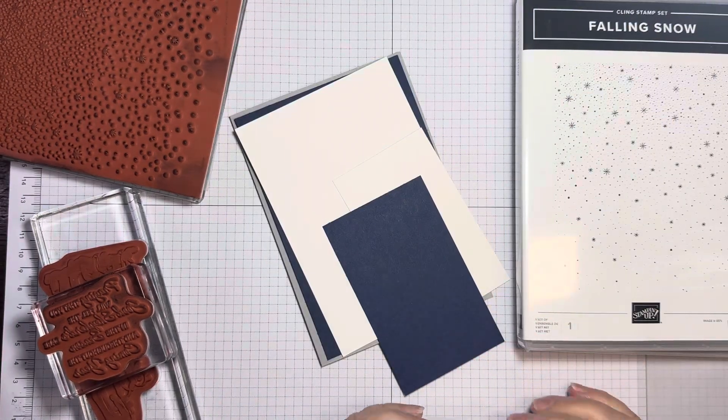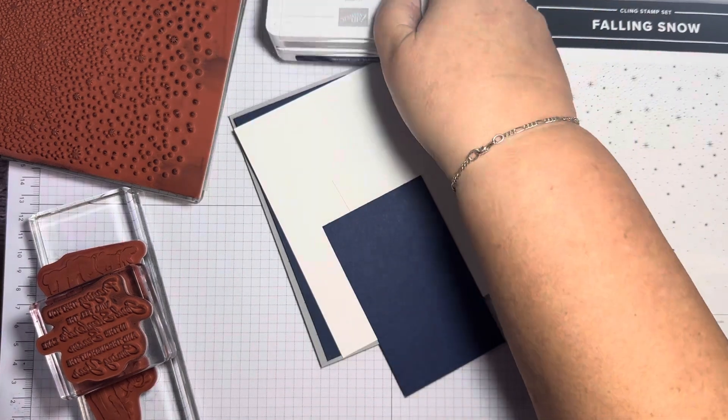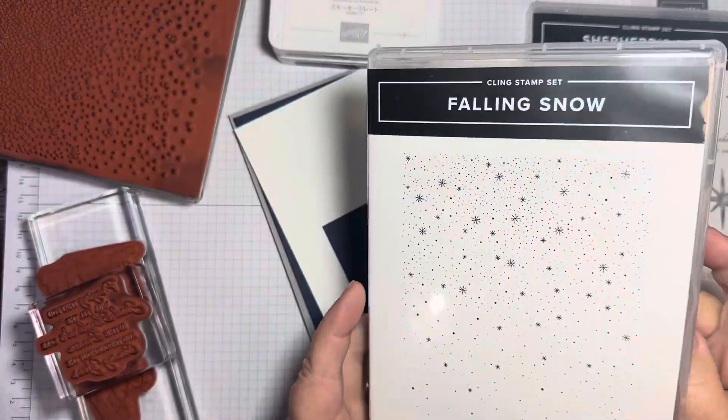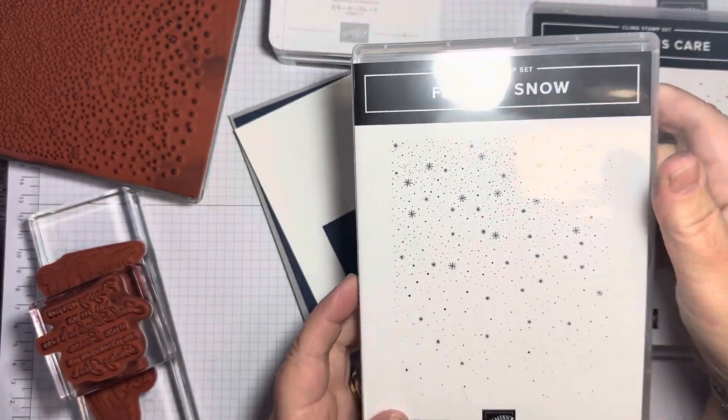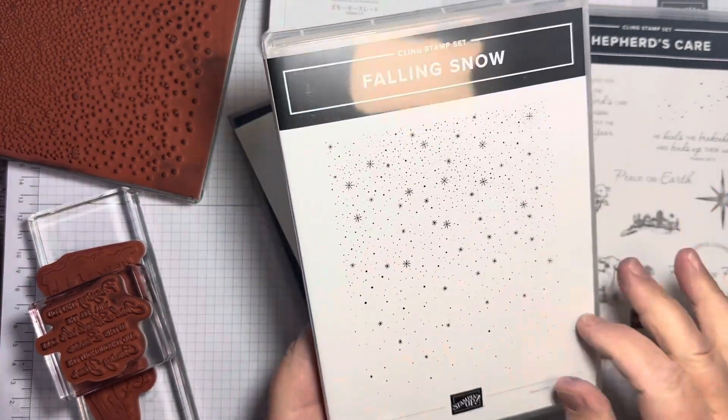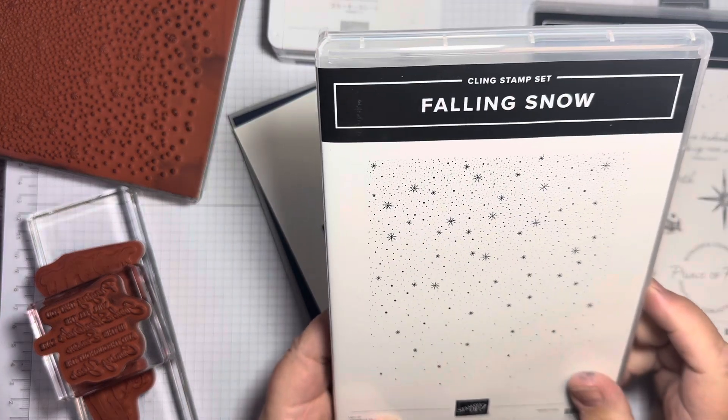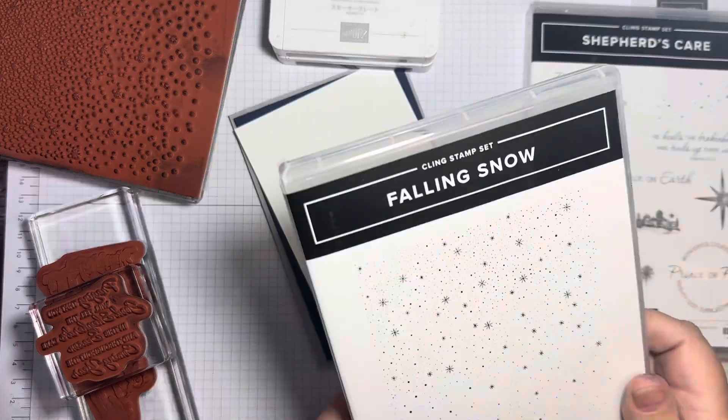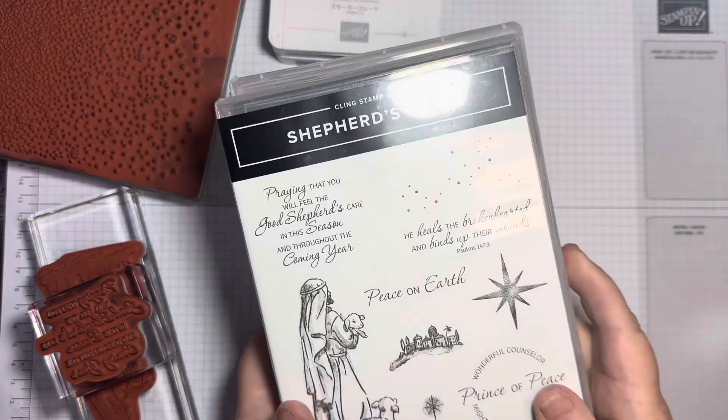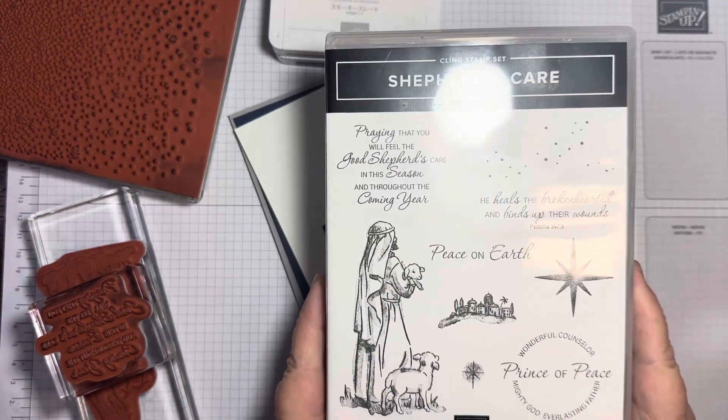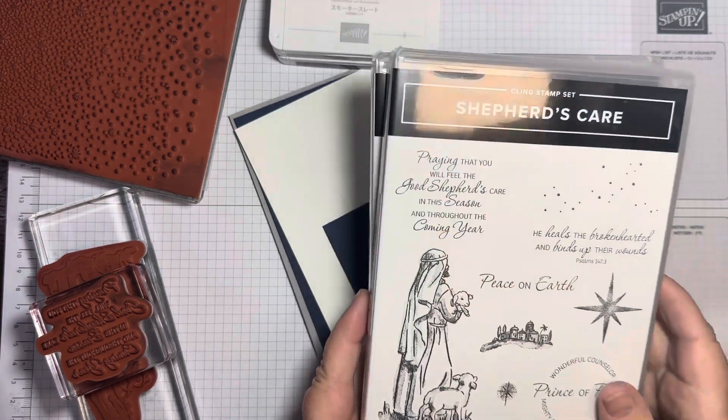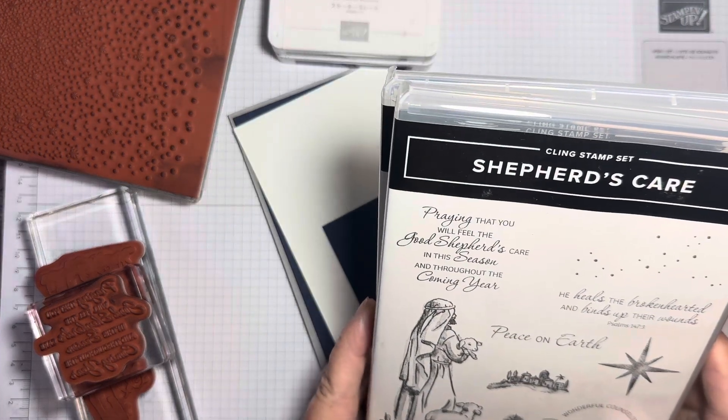I have two stamp sets at the ready. The background stamp Falling Snow just hit my desk on Monday, so I am eager to stamp with it. And I've got Shepherd's Care out again.